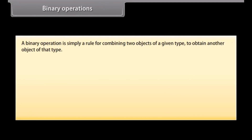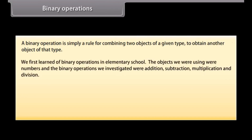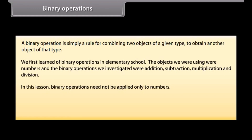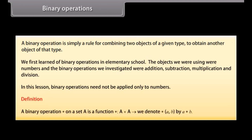Binary operations: A binary operation is simply a rule for combining two objects of a given type to obtain another object of that type. We first learned of binary operations in elementary school — the objects were numbers and the binary operations investigated were addition, subtraction, multiplication, and division. In this lesson, binary operations need not be applied only to numbers. A binary operation ★ on a set A is a function ★ from A cross A to A. We denote ★(a, b) by a ★ b.